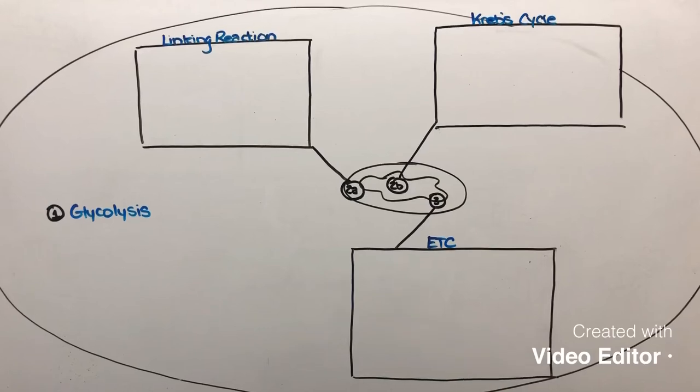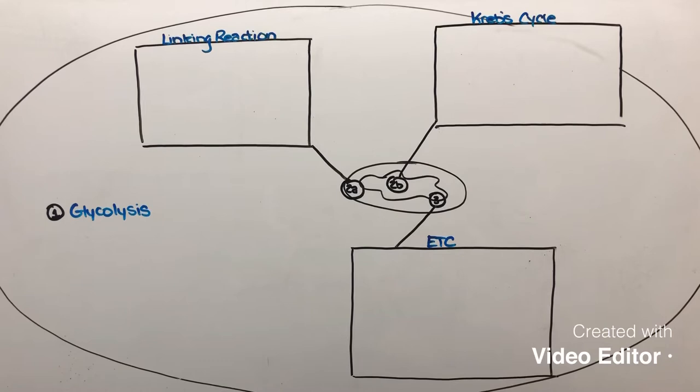In this video we're going to be looking at the stages of aerobic cellular respiration. The purpose of this process is to generate a whole bunch of ATP that can essentially provide energy to the cell. Aerobic cellular respiration is broken down into three main steps. We need to know where each step occurs as well as the main purpose of those steps and the products and requirements.